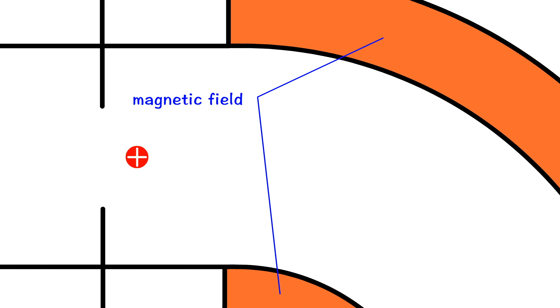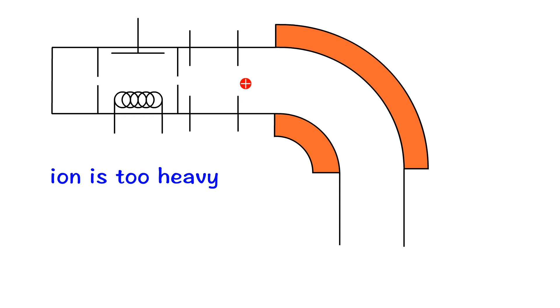Next, the sample cation will be sped up by the electric field, then move into the magnetic field. For the species with heavier mass, the magnetic field will not be strong enough to change their path, results in hitting the wall of the mass spectrometer.